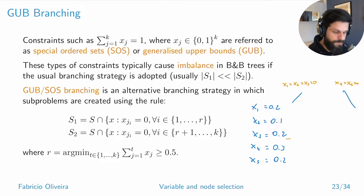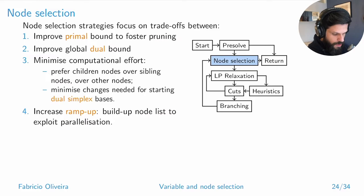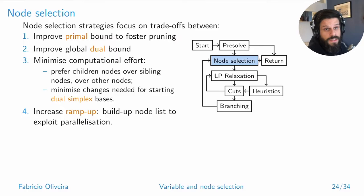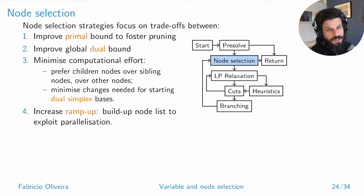Now in terms of node selection, the strategies trade off between improving primal bounds — which enables more pruning by bound — and improving the global dual bound, which is the worst dual bound seen across all open nodes, since that's the only one that can be applied globally.